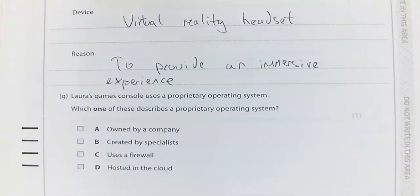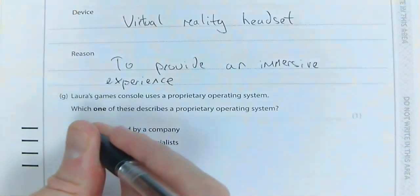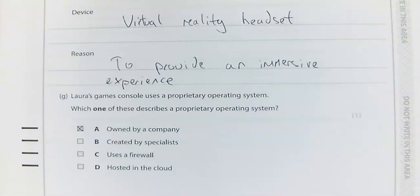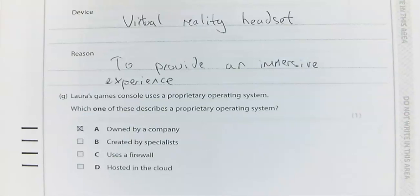Question 3g — here is a very typical Edexcel question; they love questions like this. A proprietary operating system means it is owned by a company. You've got two types of software: proprietary and open source. Proprietary means you buy it — it's owned by a company and you can't change the software. Open source means it's usually free, owned by everyone — someone makes it, puts it out open source, and people can edit and change the operating system. An example of proprietary is Microsoft Windows; an example of open source is Linux, such as Ubuntu.